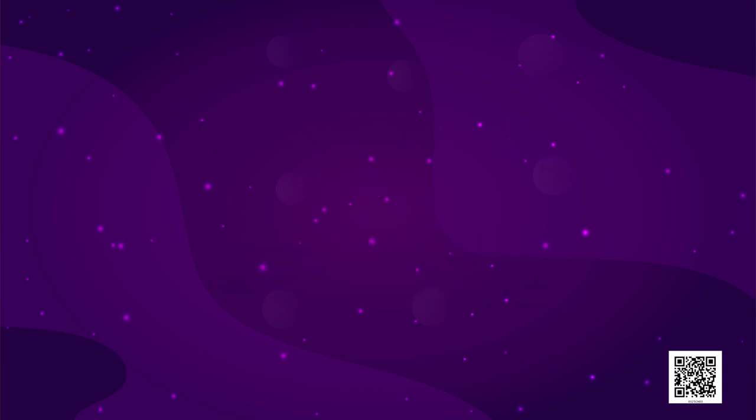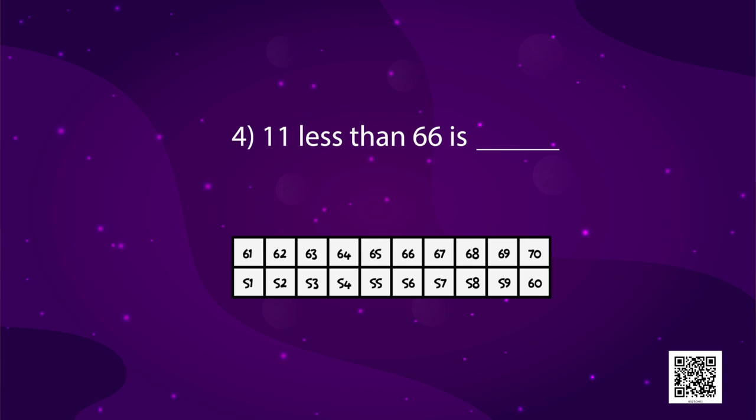Next is, 11 less than 66. So, first, we move down from 66 to 56. That is, we reduce 10 steps. And then, one more step. We move backwards from 56 to 55. So, that means, we subtract 11 from 66. And what do we get? 55.